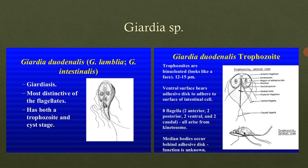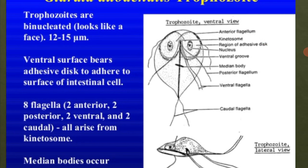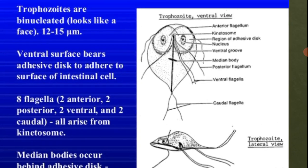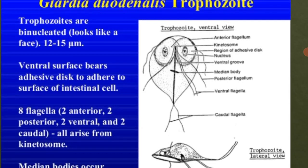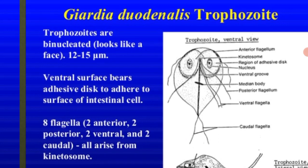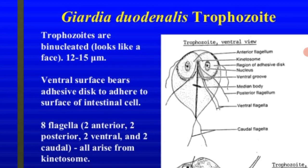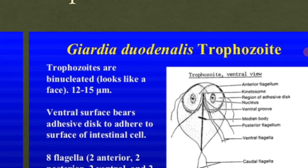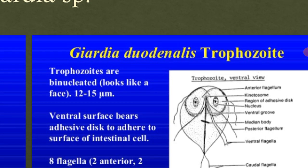Eight flagella are present: two anterior flagella, two posterior flagella, two ventral flagella, and two caudal flagella. All flagella arise from the kinetsome. The kinetsome is the main point from where all flagella originate. You can see in the picture both the ventral view and the lateral view of the trophozoite structure.